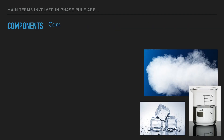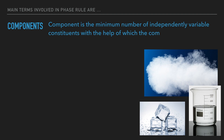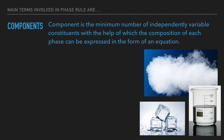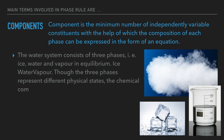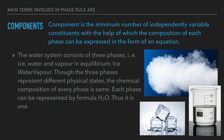Second, components. A component is the minimum number of independent variable constituents with the help of which the composition of each phase can be expressed in the form of an equation. The water system consists of three phases — ice, water, and vapor — in equilibrium. Though it is a three-phase system, the chemical composition of each phase is the same, that is H2O. Each phase can be represented by the formula H2O. Thus, it is a one-component system.